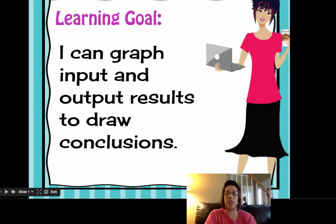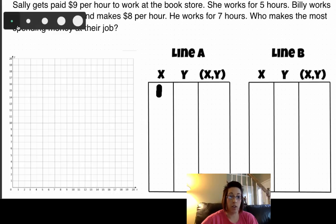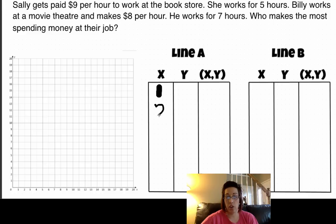So let's look at our first example here. Sally gets paid $9 per hour to work at a bookstore. She works for five hours. Billy works at the movie theater and makes $8 per hour. He works for seven hours. Who makes the most spending money at their job? So let's go ahead and call Sally line A. Sally works for five hours. Let's make hours our X and get our table started.